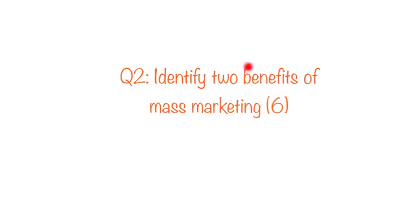Question two: identify two benefits of mass marketing. This is a six mark question. Your first two marks require a definition of mass marketing. Then you get one mark for each benefit you state, and an additional mark for explaining why — for example, stating 'mass marketing allows you to have reduced costs' gets one mark, and explaining why there are reduced costs gets the second mark. Pause the video and give yourself no more than six minutes.